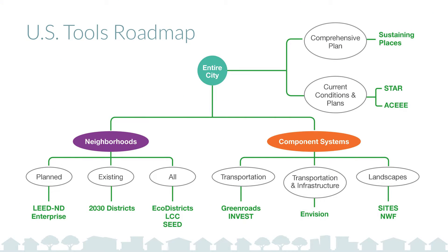With this definition in mind, here's a schematic of a tools roadmap here in the U.S. that we'll be following over the course of the series. We've organized the tools, as you can see by the colored circles, first at the upper level where an entire jurisdiction or entire city can be assessed or appraised — either their comprehensive plan or current conditions and plans throughout the city.